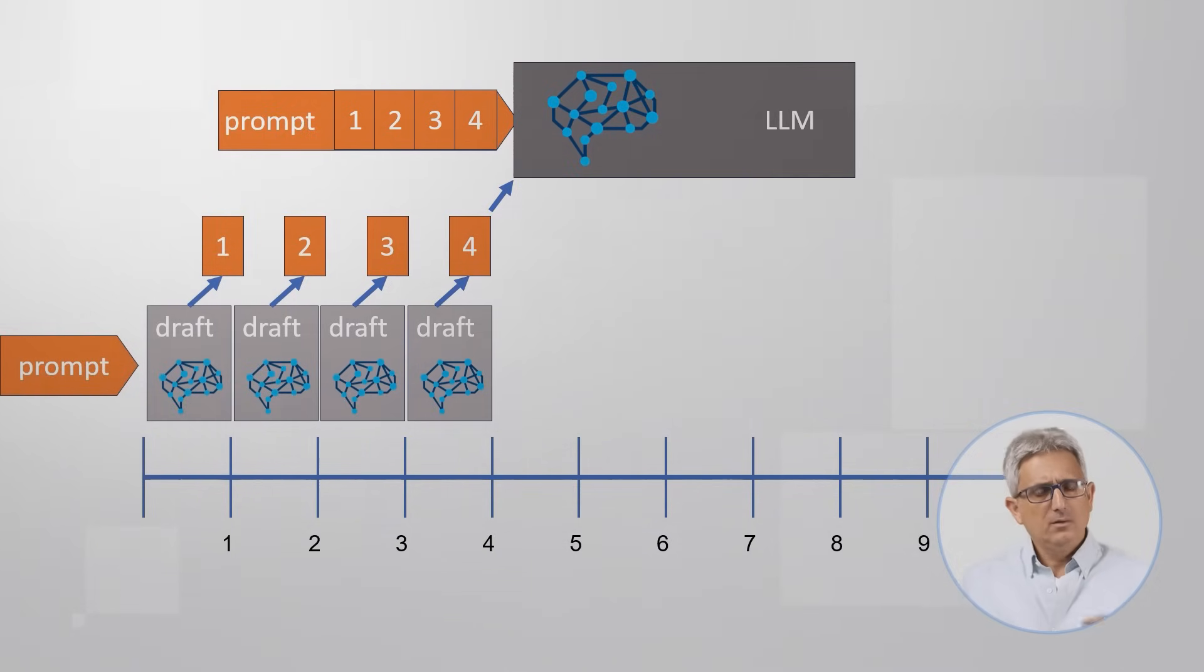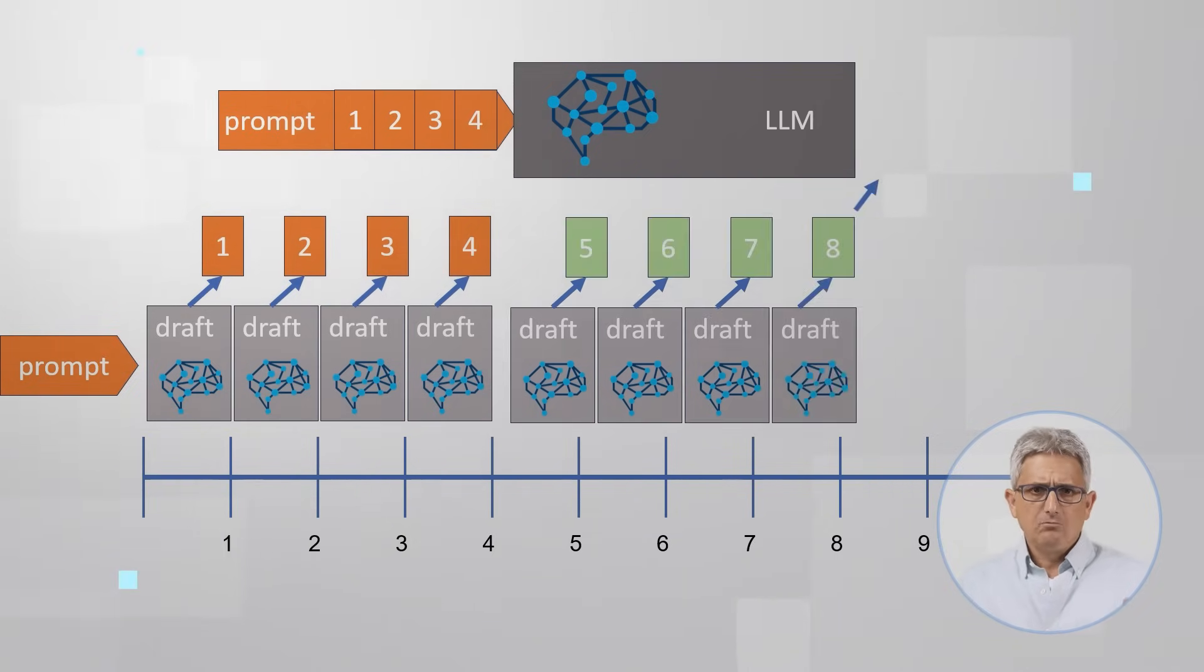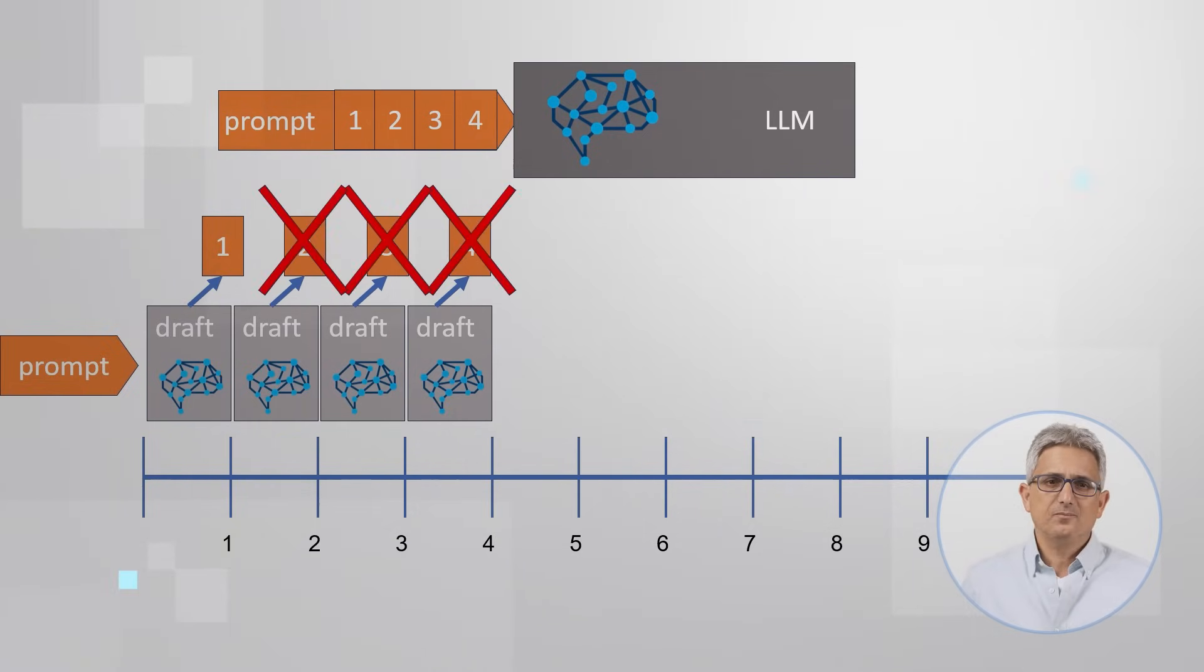So, I can now take the backward decision if to accept the draft model suggestions. I might accept all the new 4 tokens, which will be excellent, because by the time, I will have 4 new ones to evaluate. I might accept only the first token predicted by the draft model, and just remove the others, or might even reject all the predictions done by the draft model. And I can take all these decisions based on one inference of the big model on the prompt plus 4 new tokens.